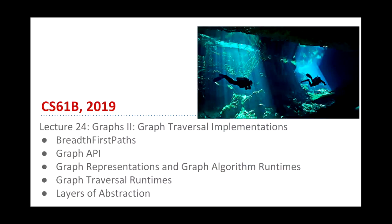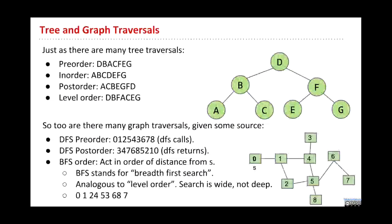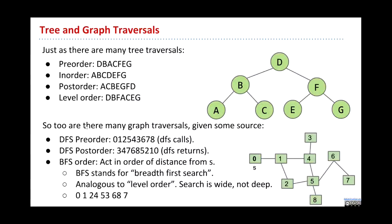All right, so today we're going to be talking about graph traversals. We already spent a lot of time on Monday talking about them, so we're going to wrap up one more traversal called breadth-first search, and then we'll talk about how you actually implement all this stuff. As you know, there are lots of different tree traversals: pre-order, in-order, post-order, level-order. In graphs, we have some equivalent orderings we can consider our vertices in: DFS pre-order, DFS post-order, and BFS order.